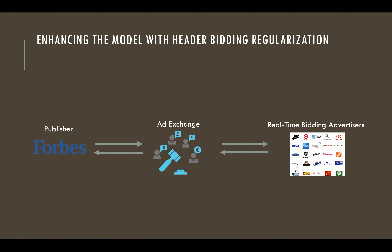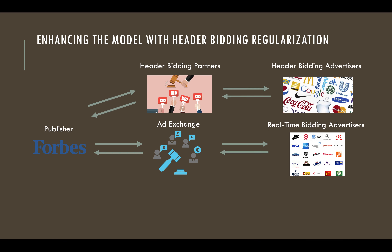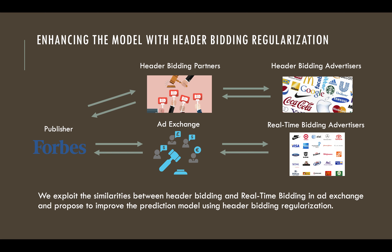Currently, before selling through ad exchange, publishers send impression information to multiple header bidding partners to conduct first price auctions. It can be assumed that header bids are pseudo-randomly sampled from ad exchange bids. Therefore, we leverage the known header bids to improve reserve price failure rate prediction.